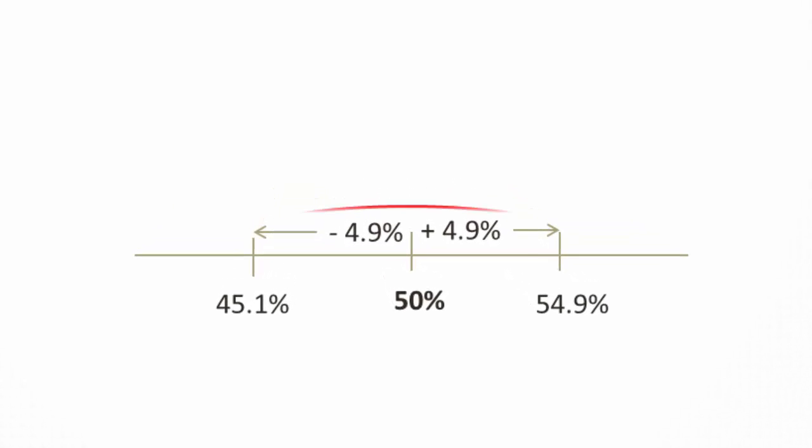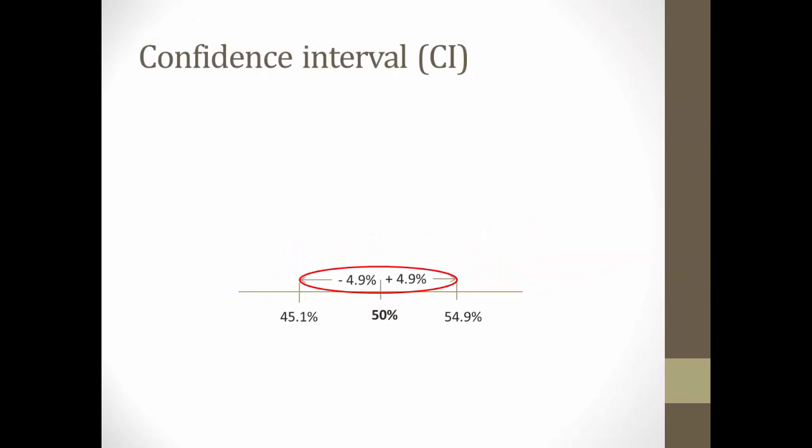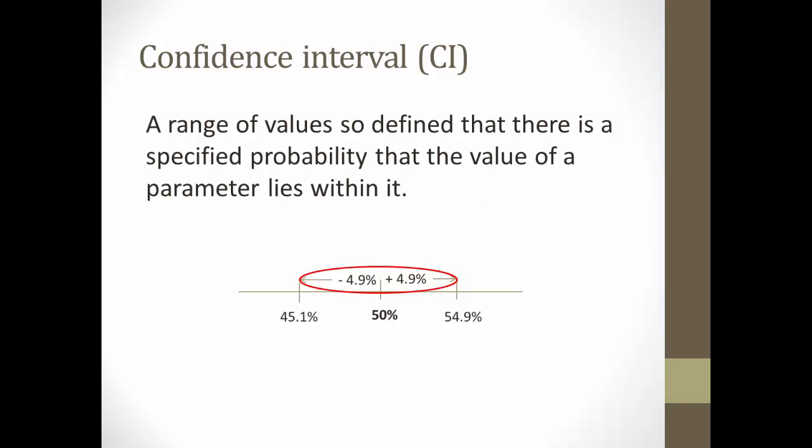We call the range between the low and the high numbers, in this case 45.1 and 54.9%, the confidence interval, which is a range of values so defined that there is a specified probability, in our case 95%, that the value of a parameter lies within it.